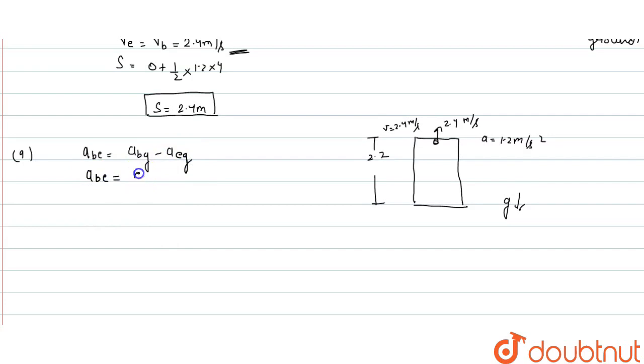Acceleration of bolt with respect to elevator equals 9.8, which we know is g, minus times of negative, which is up direction, minus 1.2. So a_be equals 9.8 plus 1.2 equals to 11 meter per second square.